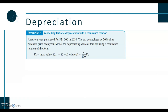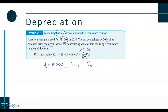The next example is taking information and putting it into a recurrence relation. A new car purchased for $24,000 in 2014 is depreciating by 20% of its purchase price. The phrase 'of its purchase price' tells us it's flat rate depreciation, not reducing balance. So V0 = 24,000. We work out d = 20% × 24,000 = $4,800 per year.